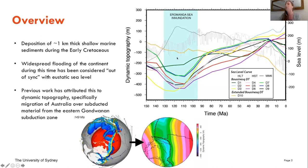I'm not sure how all the colors come out in the slideshow, but this light grey sea level curve here - our main Eromanga Sea flooding event seems to be happening when we're getting this dip in sea level. Previous work has actually attributed this discrepancy to dynamic topography, particularly the migration of eastern Australia over subducted material from the eastern Gondwana subduction zone.